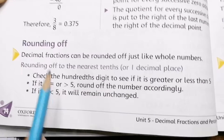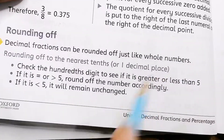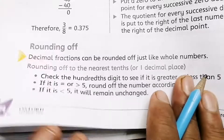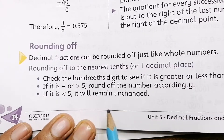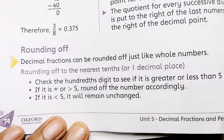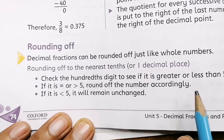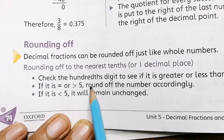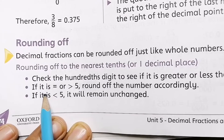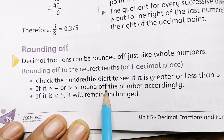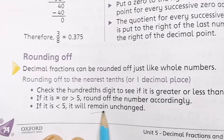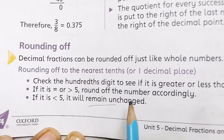A very important concept now: rounding off. How do you round off numbers? You need to look at the digit in the tenth or hundredth place on the right side of the decimal. If that digit is less than five, you do not change the number. If it is equal to or greater than five, you round the number up accordingly.